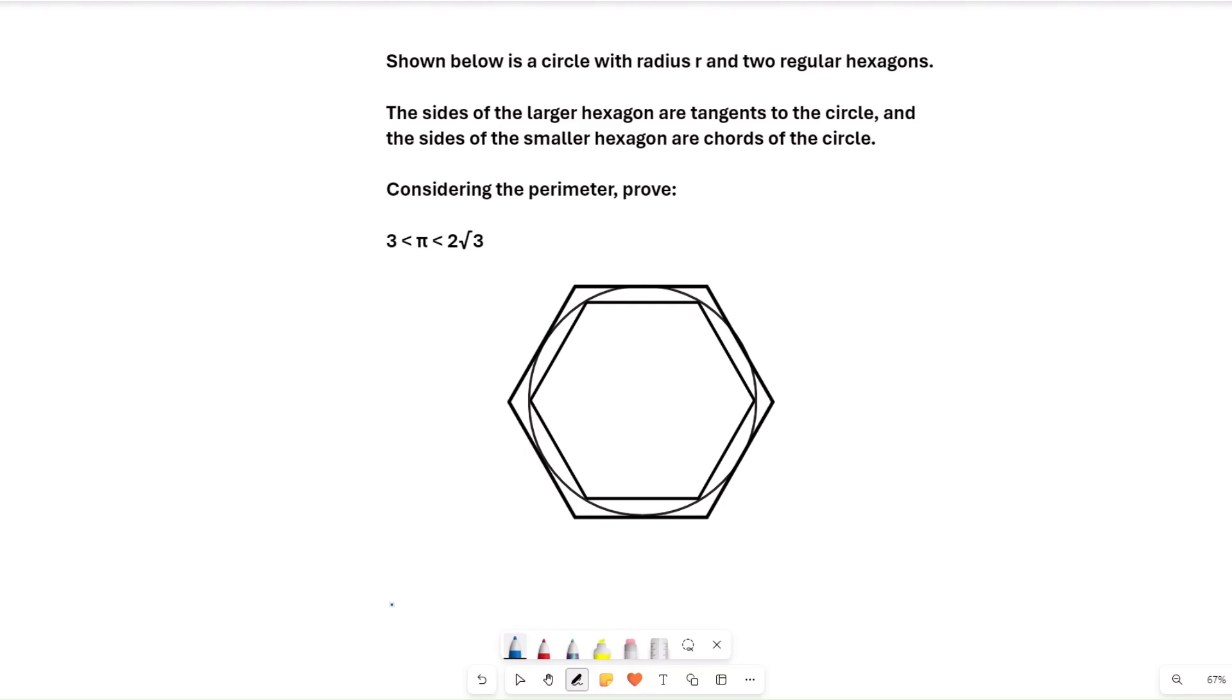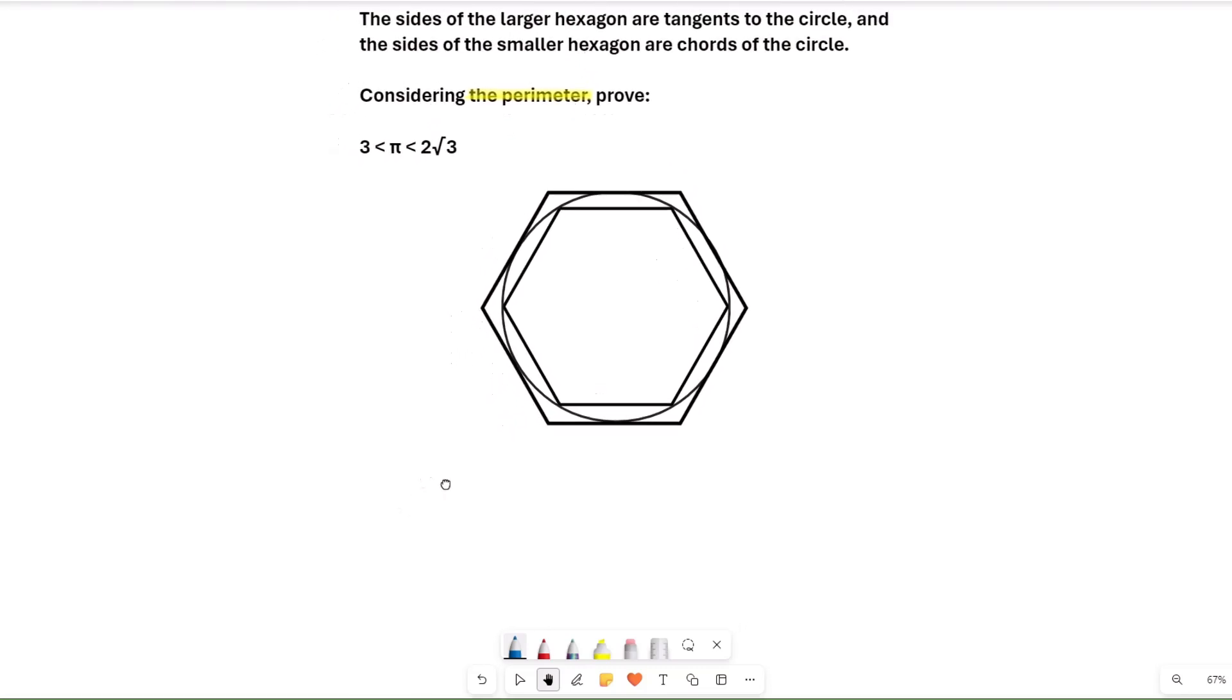Shown below is a circle with radius r and two regular hexagons. The sides of the larger hexagon, that's the one on the outside of the circle, are tangents to the circle, and the sides of the smaller hexagon, that's the one on the inside, are chords of the circle. We need to consider the perimeter and prove that 3 is less than pi, which is less than 2 root 3. So let's just look at the question, considering the perimeter, so what that indicates to us is that we need to find the perimeter of the shapes.